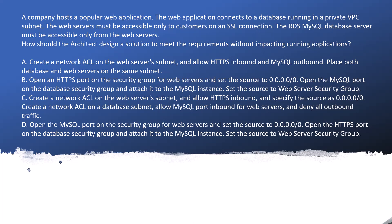A company hosts a popular web application. The web application connects to a database running in a private VPC subnet — that's our first hint: the database is in the private VPC subnet. The web service must be accessible only to customers on an SSL connection, meaning HTTPS protocol. Third condition: the RDS MySQL database server must be accessible only from the web server.